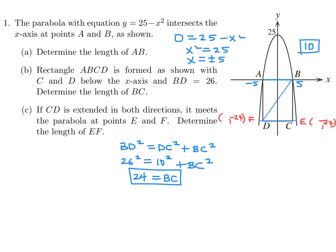So then I just have to figure out the x-coordinate. If y is minus 24, plug that into the equation, then x squared will be 49, and x equals plus or minus 7. So this will be 7, and this will be minus 7. The distance from minus 7 to plus 7 is 14. So 14 is the length of EF.